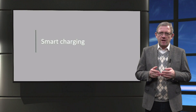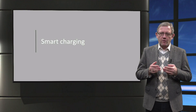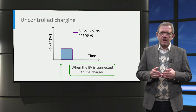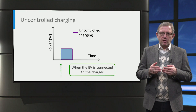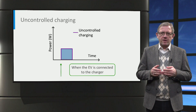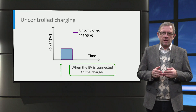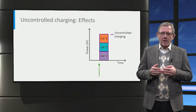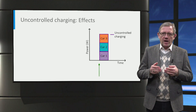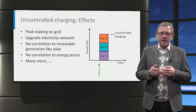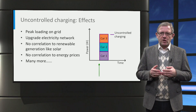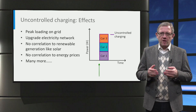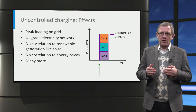Now that we have looked at the charging process, let us see what smart charging is and how it is different from conventional charging. When we connect an electric vehicle to an EV charger, charging starts as soon as the electric vehicle is plugged in. The charging occurs at a fixed charging power until the electric vehicle battery is full. This is often referred to as uncontrolled or conventional charging. In the case of multiple cars connected at the same time, all the cars will charge simultaneously, which may lead to a peak loading on the electricity grid, requiring upgrades to power lines and transformers. Further, this kind of charging has no correlation to renewable energy generation or energy prices, as charging always happens at a fixed power.